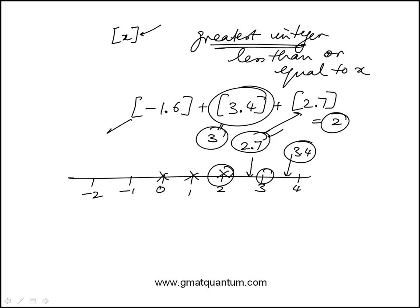And then on this end, -1.6 is here. The greatest integer that is less than or equal to -1.6 is -2, because -3 is also less, but it's not the greatest. The greatest is -2.